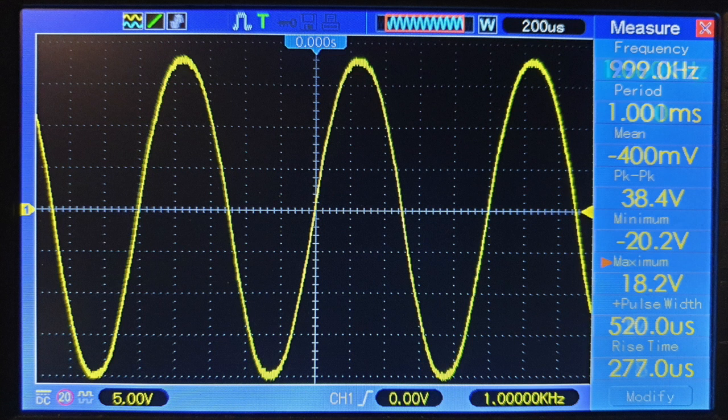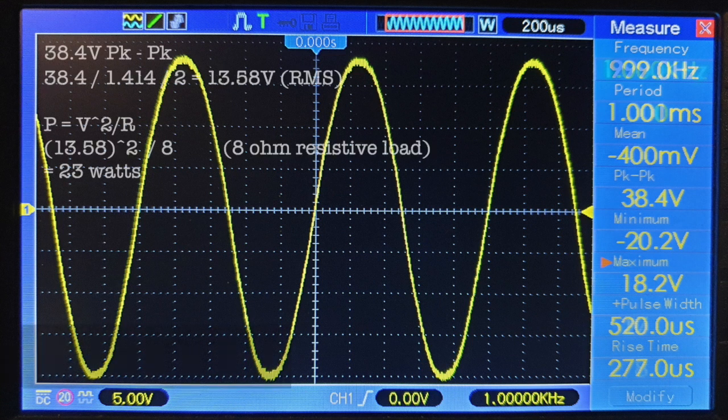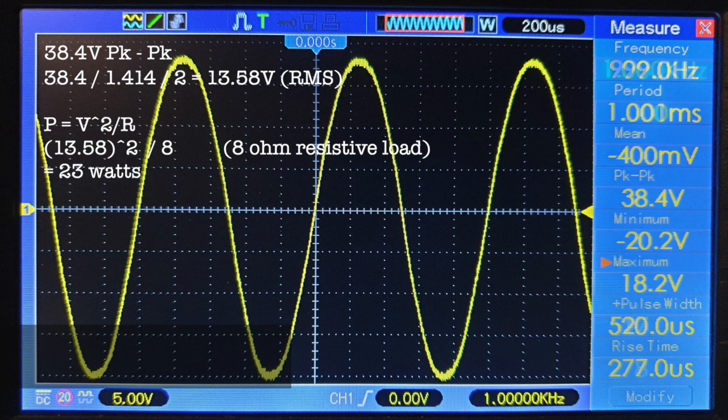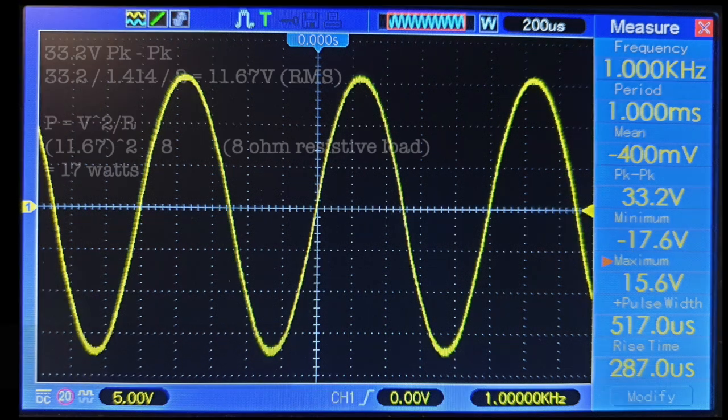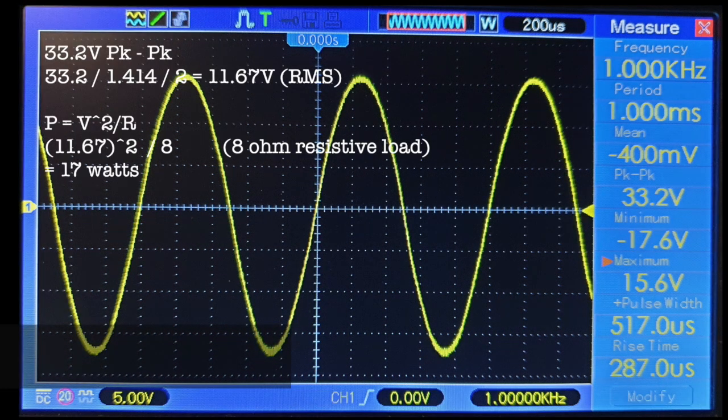Until the sine wave looks pretty clean as it is on that picture right there. This is fixed bias mode, we're measuring 38.4 volts peak to peak which is 23 Watts clean RMS power. Now if we move to cathode bias, you can see we've measured 33.2 volts, it's 17 Watts. So 23 Watts in fixed bias, 17 Watts cathode bias. Same amp, same power transformer and so on. So the difference between the two is six Watts.